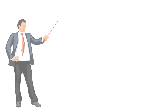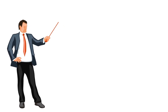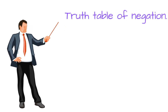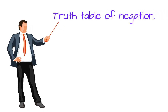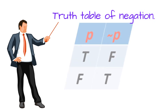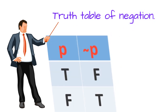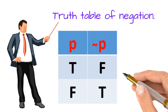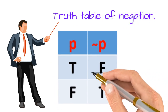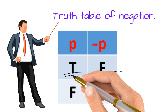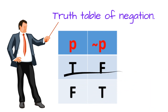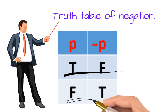Now we shall see the truth table of negation. If P has truth value true, then negation of P has truth value false. And if P has truth value false, then negation of P has truth value true.